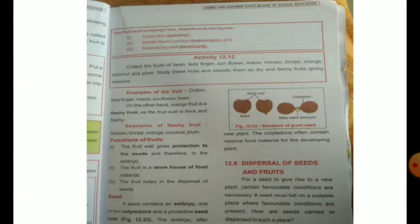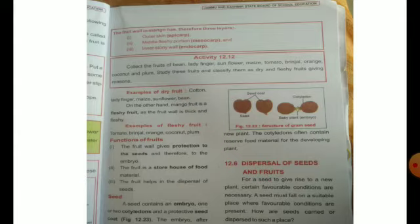Fleshy fruits include mango, tomato, brinjal, orange, and plum. What are the functions of fruits? The fruit wall provides protection to the seeds and thus also to the embryo. The fruit is a storehouse of food material — food is stored in the fruit. And later the fruit helps in the dispersal of seeds — dispersal means when seeds spread and fall in other places.